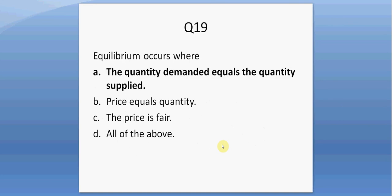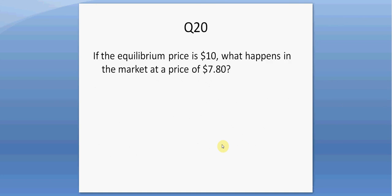Question nineteen. Equilibrium occurs where quantity demanded equals quantity supplied. Question twenty. If the equilibrium price is $10, what happens to the market at a price of $7.80? You're going to have a shortage — at a price of $7.80, quantity demanded will exceed quantity supplied. A shortage is sometimes referred to as excess demand.